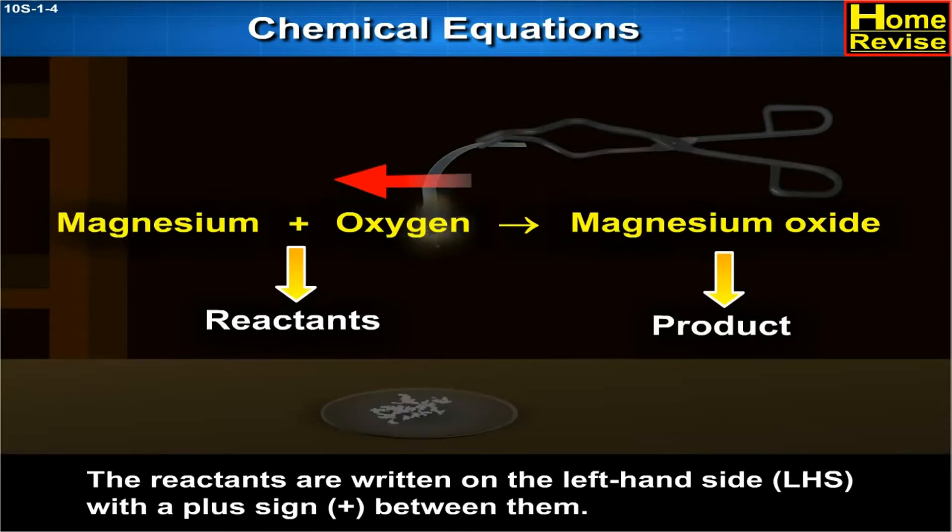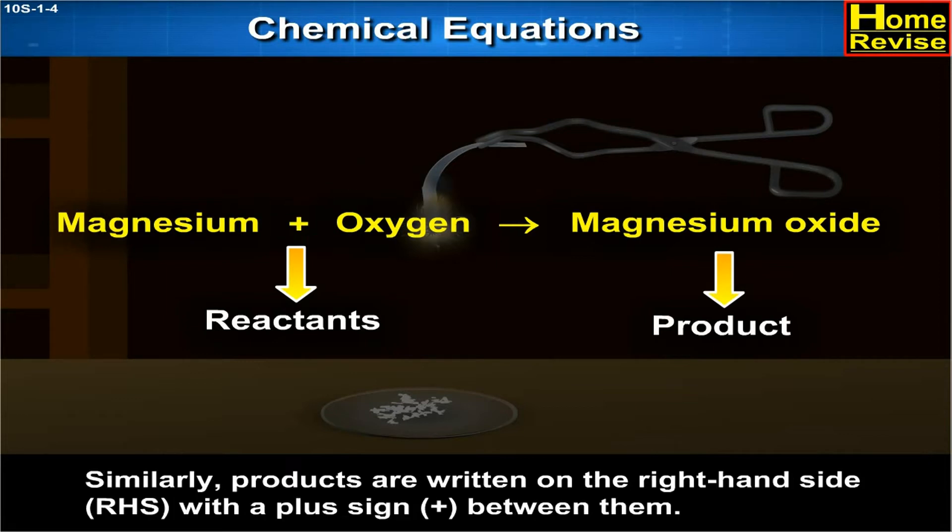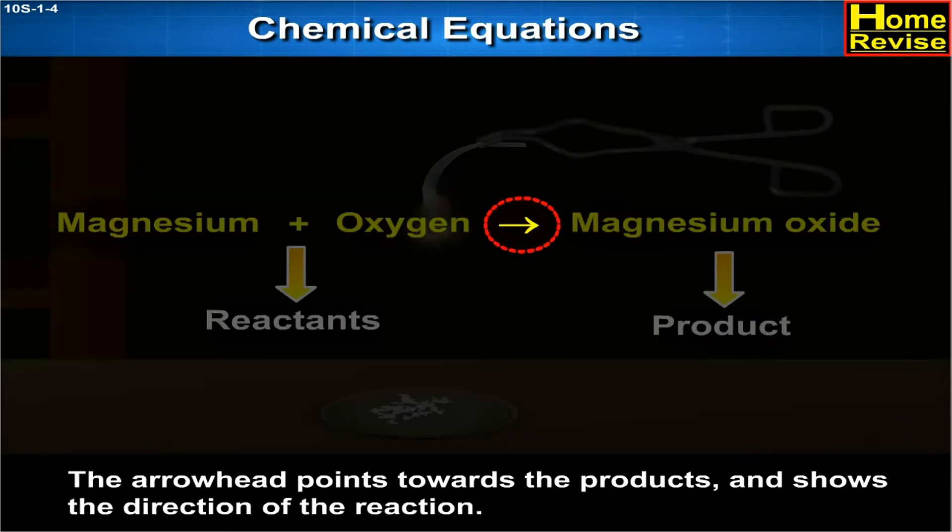The reactants are written on the left-hand side, i.e. LHS, with a plus sign between them. Similarly, products are written on the right-hand side, i.e. RHS, with a plus sign between them. The arrowhead points towards the products and shows the direction of the reaction.